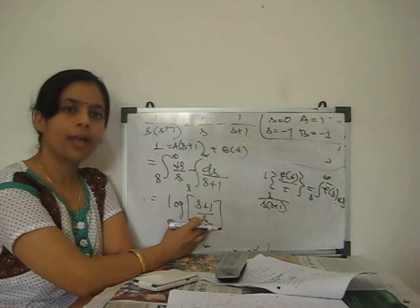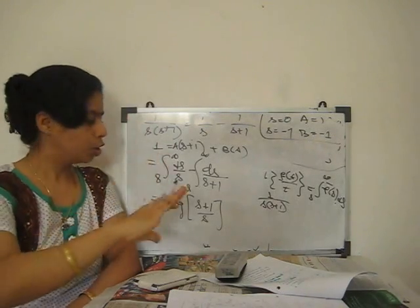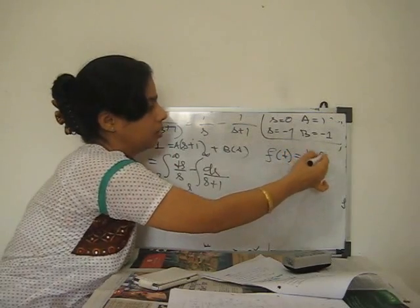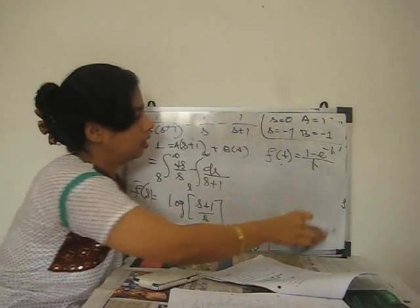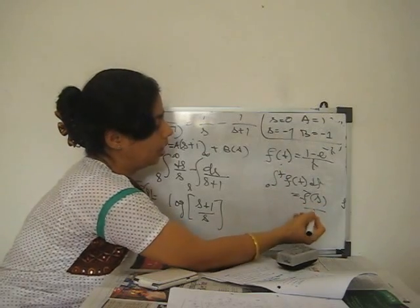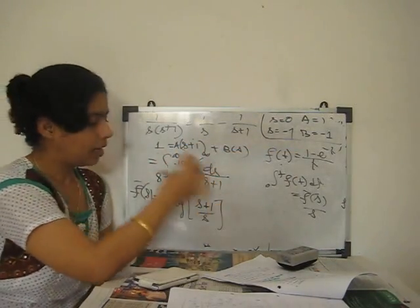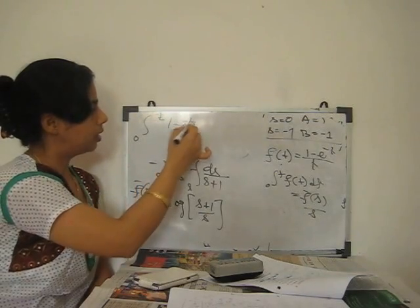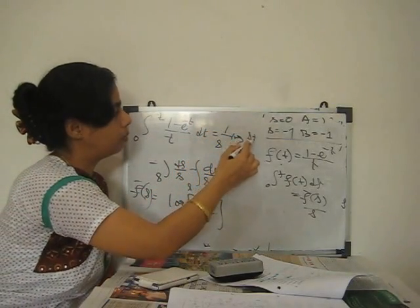So the Laplace transform of (1 − e^(−t))/t is log((s+1)/s), which is F̄(s). Now applying the integral property: L{∫₀ᵗ (1 − e^(−t))/t dt} = F̄(s)/s = (1/s)·log((s+1)/s).